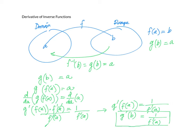Let's go over the steps again one more time. I start out with g of b equals a. g of b is g of f of a equals a — that is our definition of an inverse function. Then I take the derivative of both sides with respect to a.